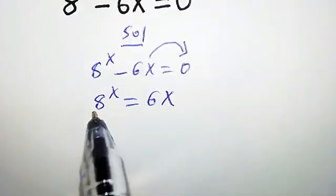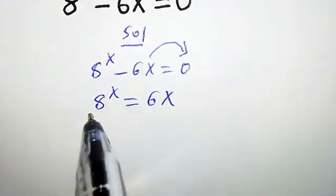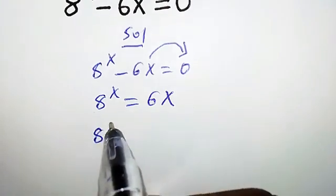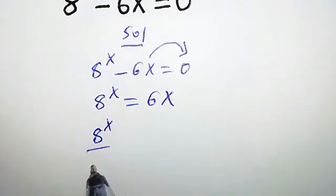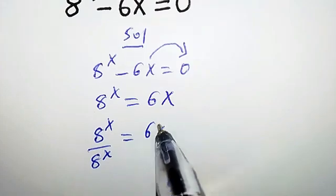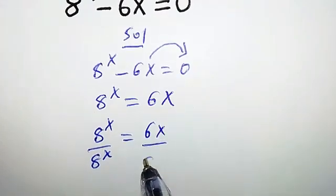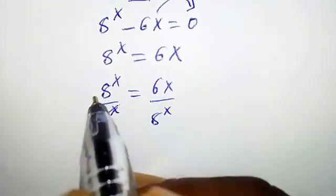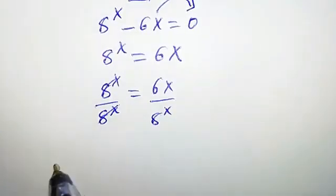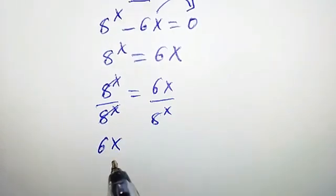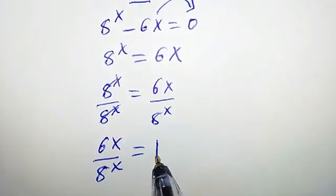Now let's divide both sides by 8 to the power of x. So we're going to have 8 to the power of x over 8 to the power of x equal to 6x over 8 to the power of x. Clearly, this cancels, so we are left with 6x over 8 to the power of x equal to 1.